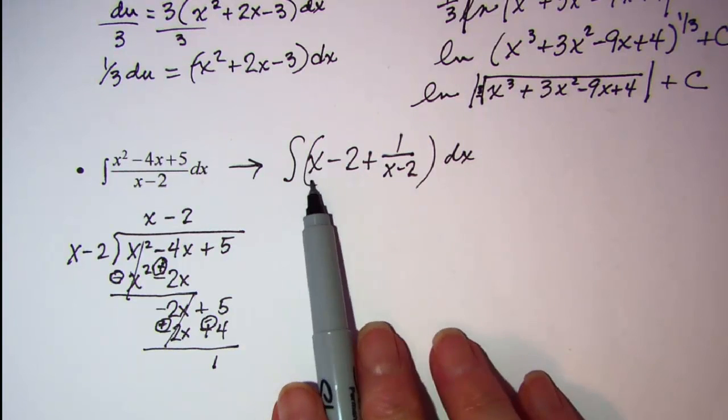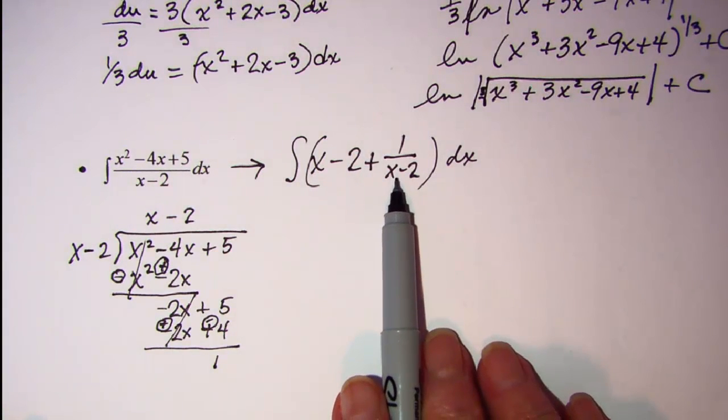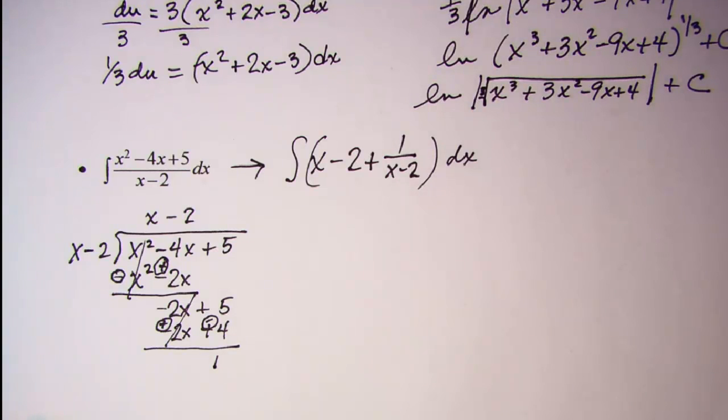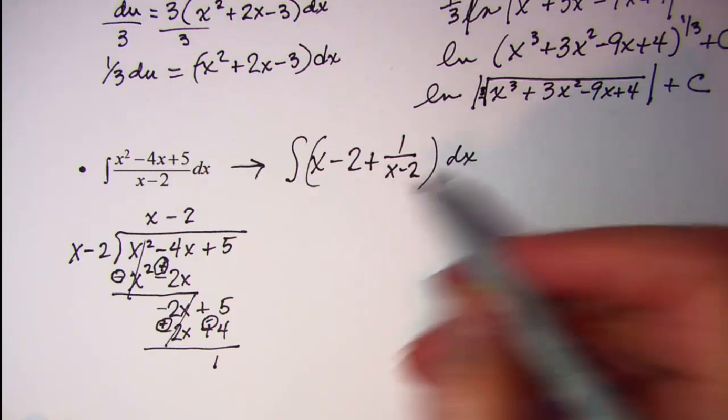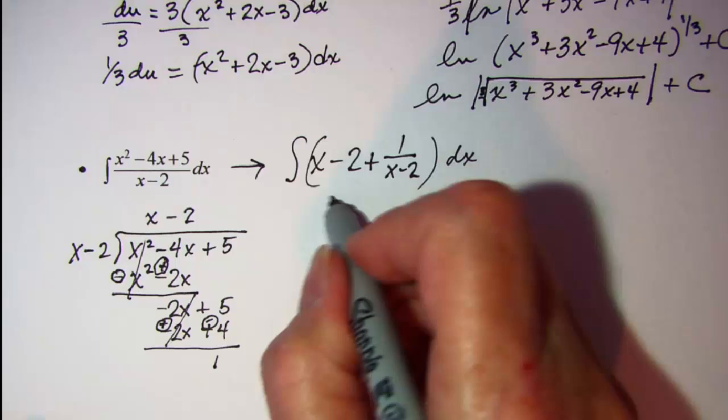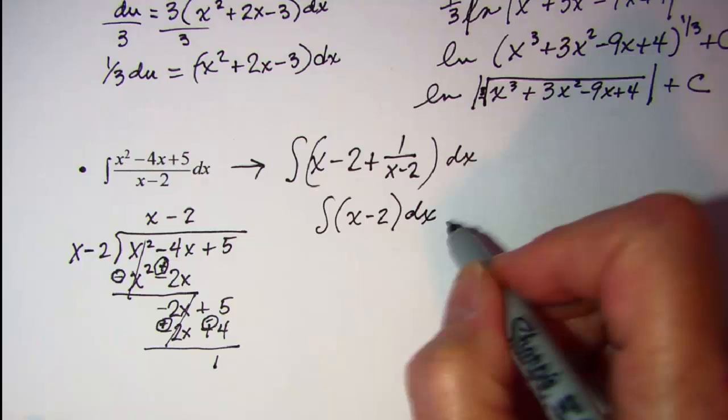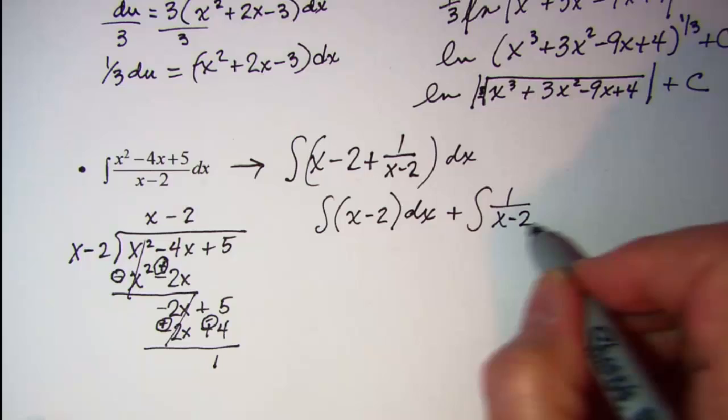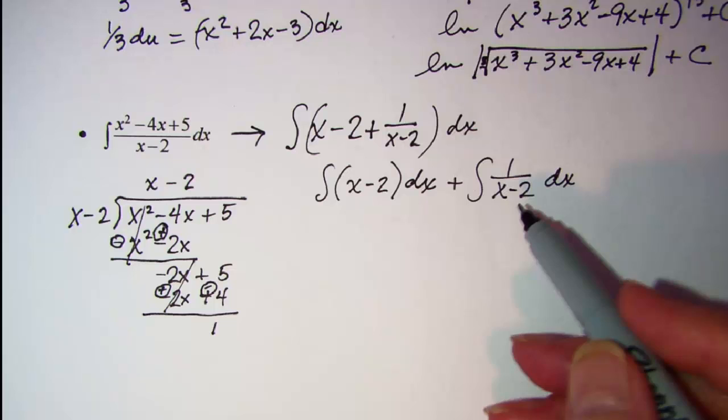This one doesn't require u substitution since the derivative of x minus 2 is just 1. I can split this up and have the integral of x minus 2 plus the integral of 1 over x minus 2, so you can see the log rule easier.